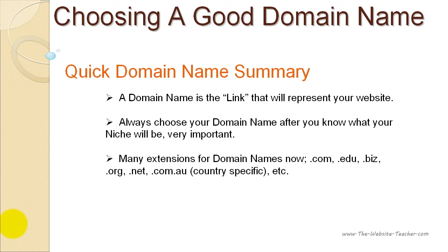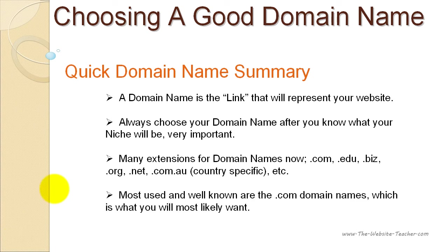However, there are also many other extensions that can be used for a domain name. You can have domain names that use .org, .net, .edu, or .biz extensions. You can even have country-specific extensions — for example, in Australia the country-specific domain name would be .com.au, and there's also .net.au and .org.au. Even so, the most common and well-known extension is .com.